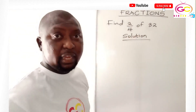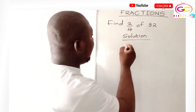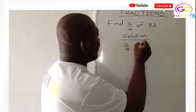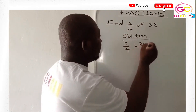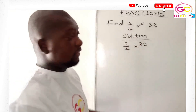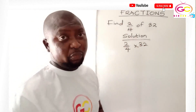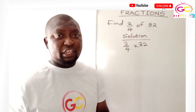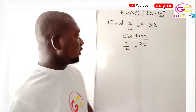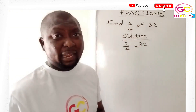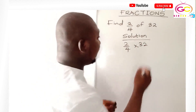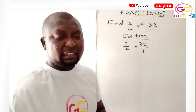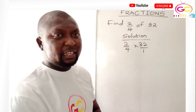We have 2 over 4 times 32. As I always say, in this context your multiplication has to be very good — you have to take multiplication seriously. 32 can be written as 32 over 1, which is the same thing. Any constant written as a fraction over 1 does not change its value.